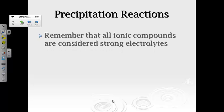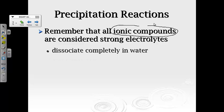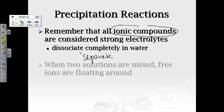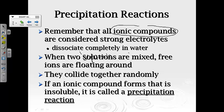All right, now the last piece we're gonna do, we're gonna talk about precipitation reactions. Now, precipitation reactions, if you remember, all ionic compounds are considered strong electrolytes. And we're gonna add a piece to this, meaning they dissociate or completely separate in water. When two solutions are mixed, there are lots of free ions floating around, and they can collide randomly. Now, if an ionic compound forms that is insoluble, it's called a precipitation reaction. Now, we've seen some of these before. We abbreviated this as PPT.